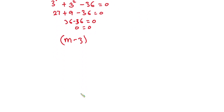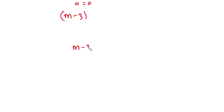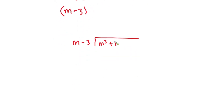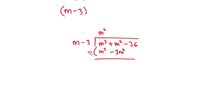Now we find the other roots using the long division method. We divide m cubed plus m squared minus 36 by m minus 3. m goes into m cubed giving m squared. m squared times m is m cubed, m squared times negative 3 is negative 3m squared. Subtracting gives 0 for m cubed, and m squared minus negative 3m squared gives 4m squared. Bring down the negative 36. m goes into 4m squared giving 4m.